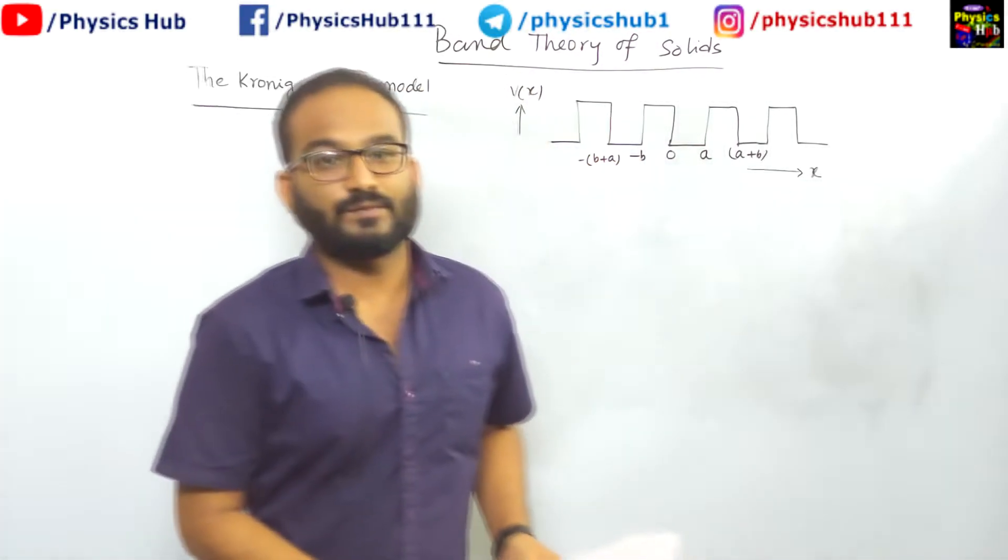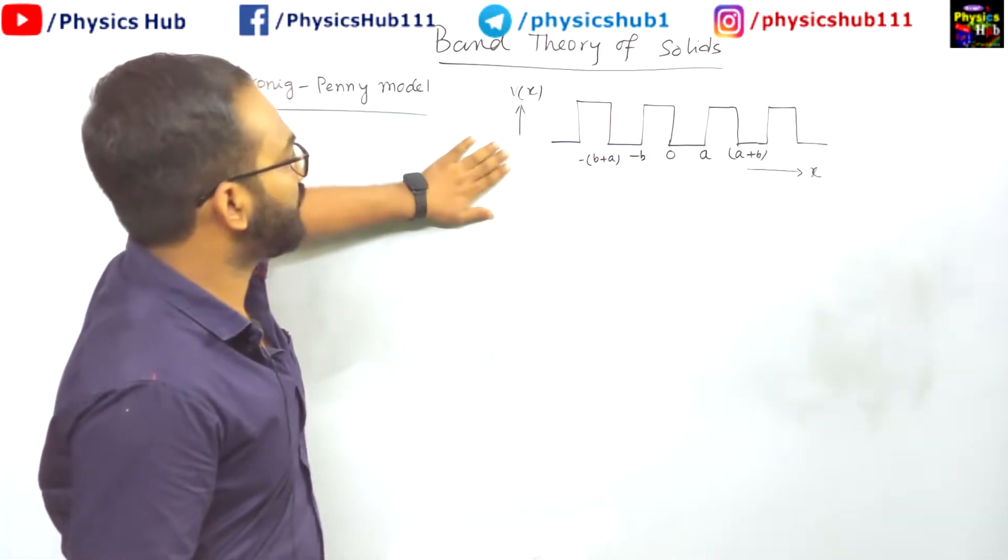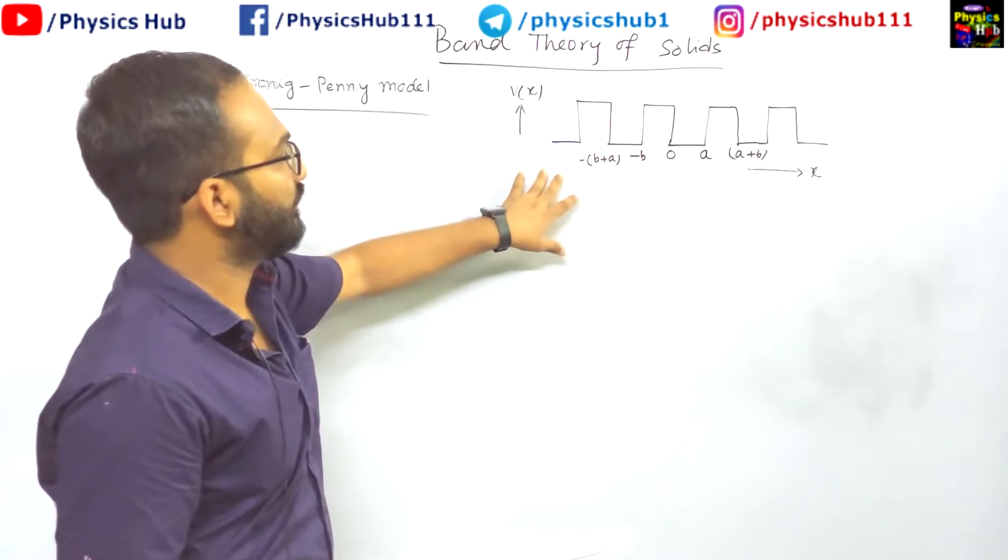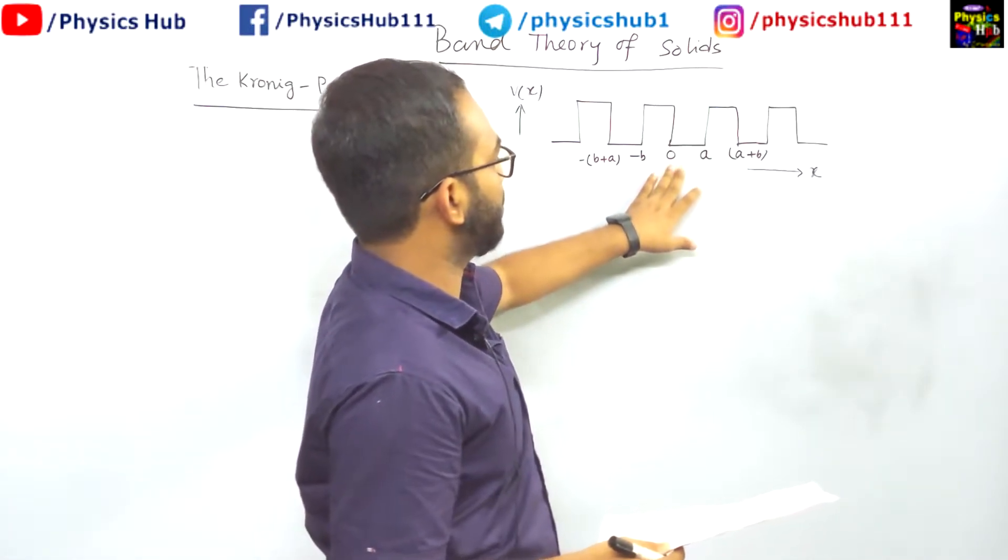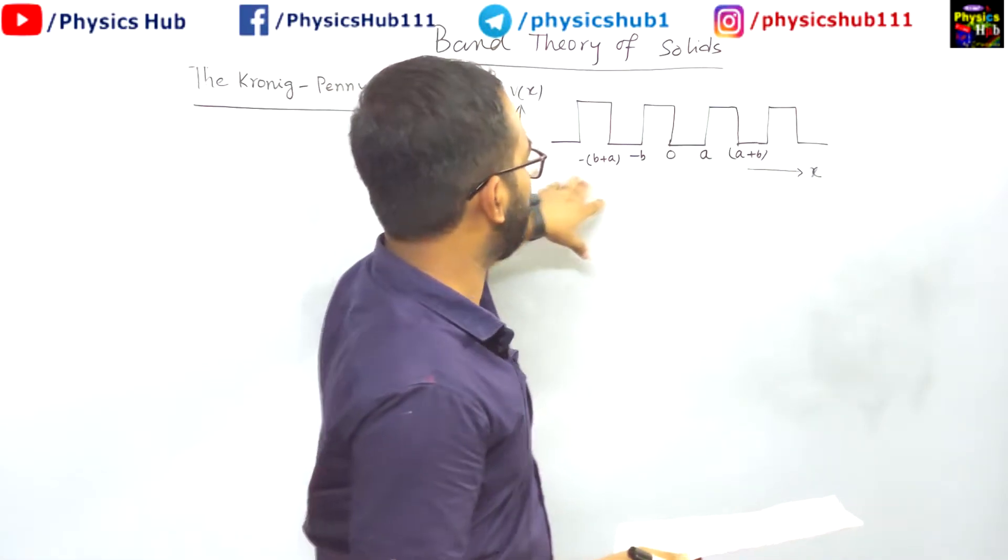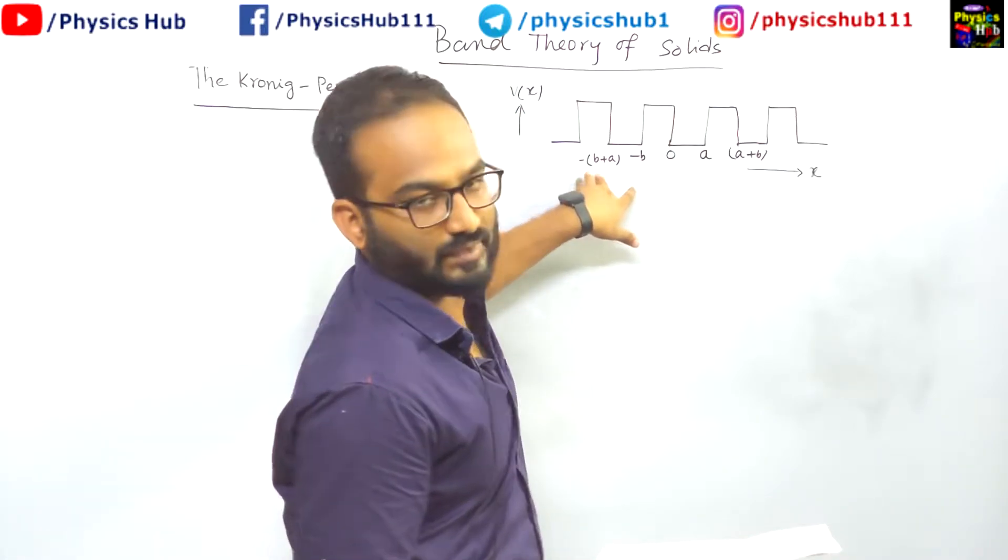Okay, so we are discussing Kronig-Penney model. We have just redrawn the potential. So you can see it is minus b to 0, 0 to a, a to a plus b and on this side minus a plus b.